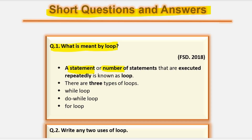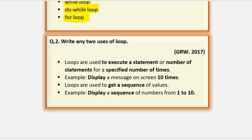A loop is a construct that repeats one or more statements. We call it a loop. There are three types of loops: while loop, do-while loop, and for loop.